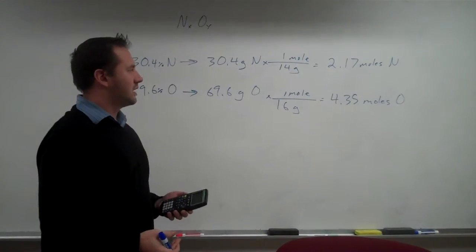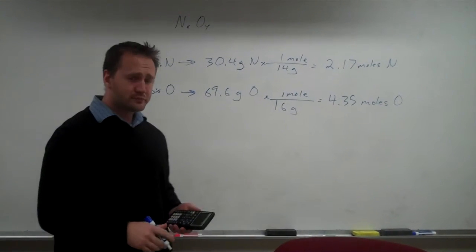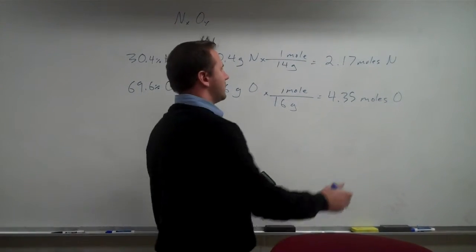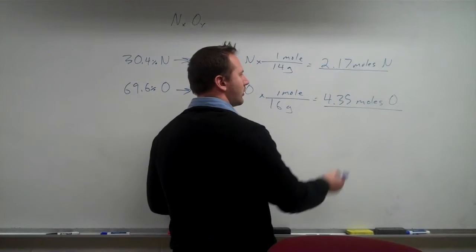This is a ratio of these two elements, and the goal for empirical formula is to find the lowest whole number ratio. Whenever you're finding the lowest whole number ratio of two substances, you always divide by the lowest number available. The lowest number available out of these two is 2.17, so we divide both by this number.